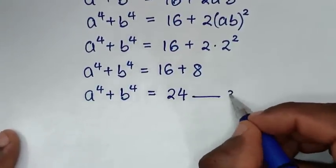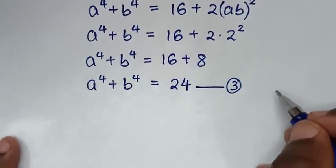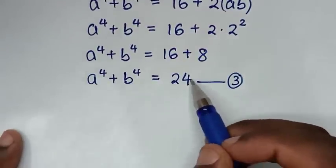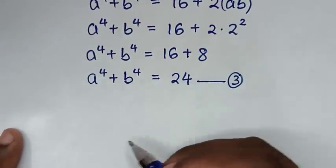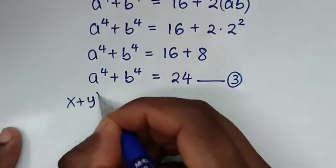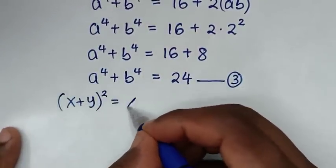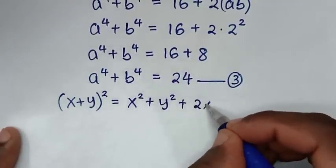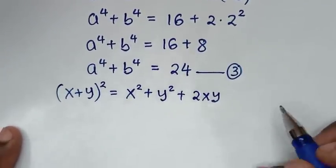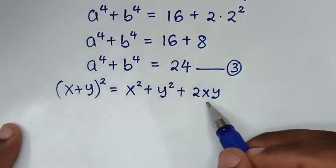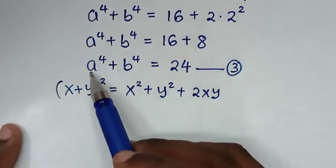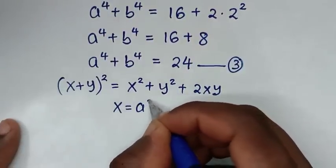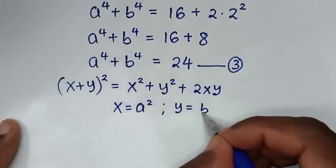We call this equation 3. Now since we have a⁴ + b⁴ = 24, we apply the bracket rule: (x + y)² = x² + y² + 2xy. To express this in terms of a and b, we let x equal a² and y equal b².